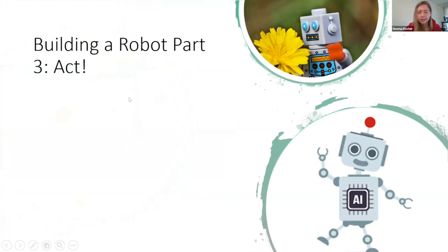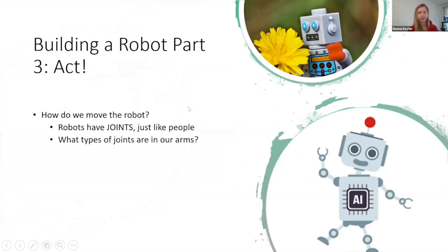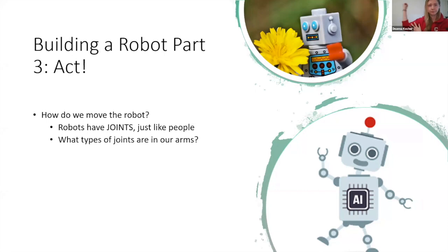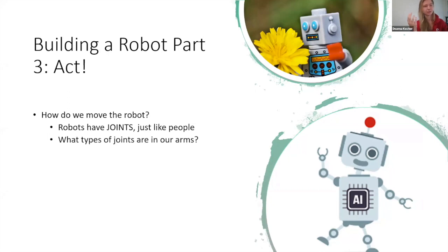The last thing robots have to do is figure out how to act. We've decided to pick flower three — now it's a matter of actually moving the robot. Robots have joints just like people. Our shoulder joint is a ball-and-socket joint that can rotate in any direction. Our elbow is a hinge joint that only bends in one direction. Our wrists are actually really weird — they twist in all kinds of directions but can't fully rotate. Robots don't normally have joints similar to our wrists. All our fingers are little hinge joints.